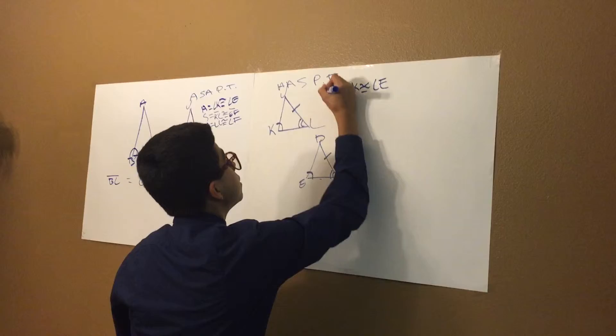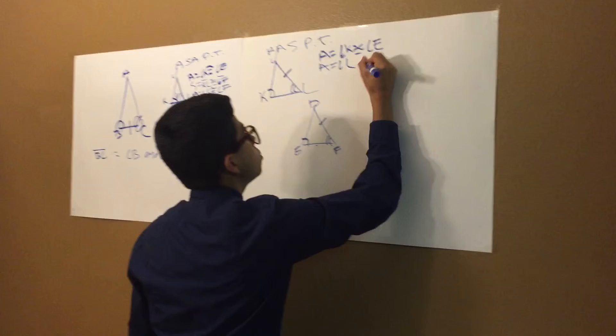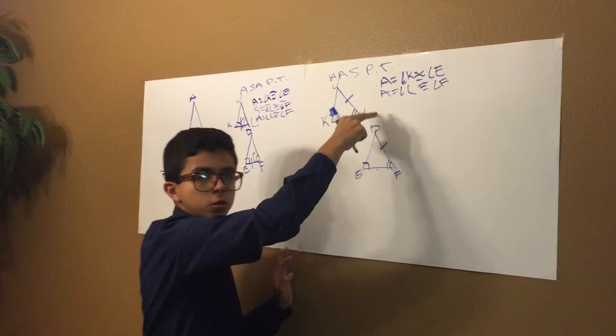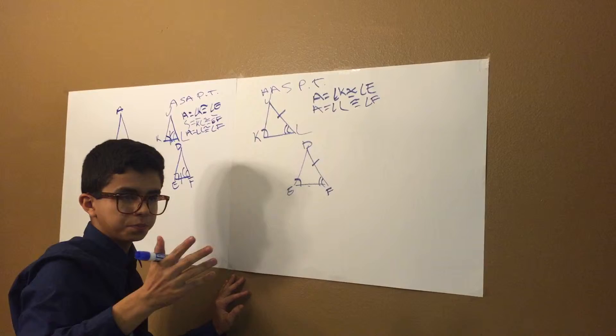Now for the next angle, it's going to be angle L is corresponding equal to angle F. So far those are the angles for these two triangles.